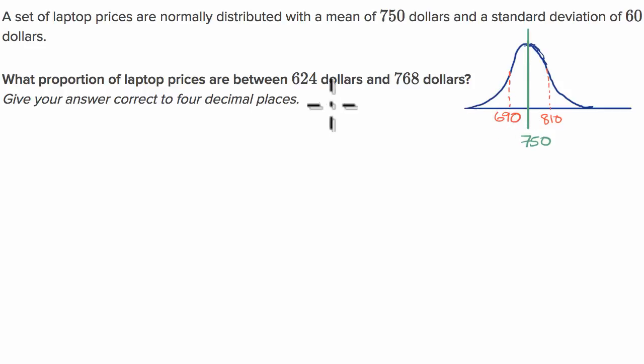They tell us what proportion of laptop prices are between $624 and $768. The lower bound, $624, is going to actually be more than another standard deviation less, so that's going to be right around here at $624. And $768 would put us right at about there. This is just a hand-drawn sketch.